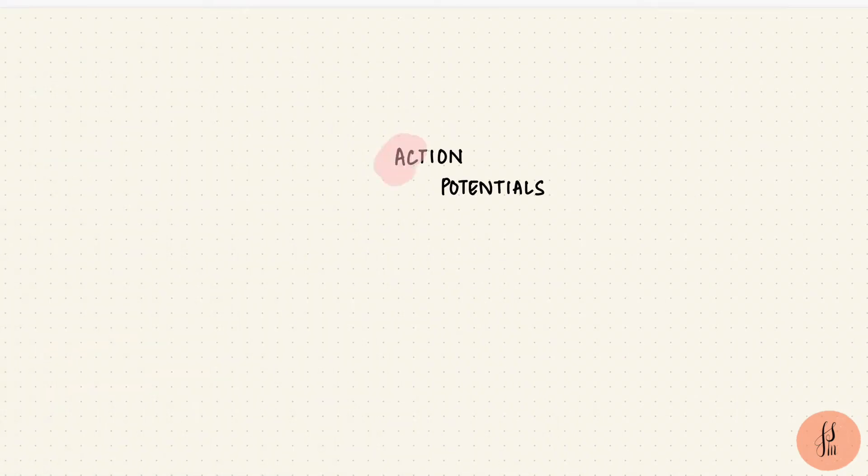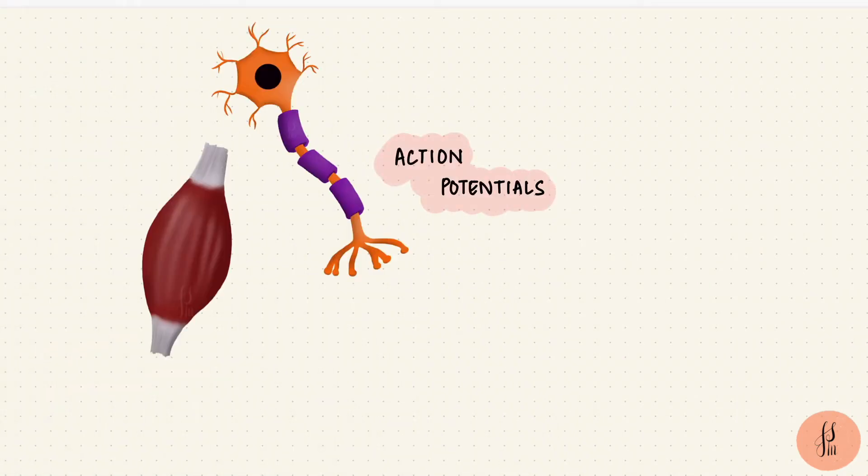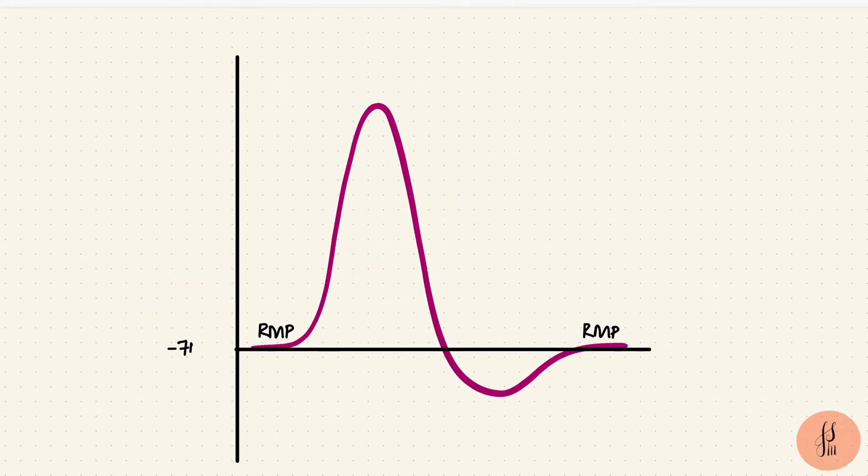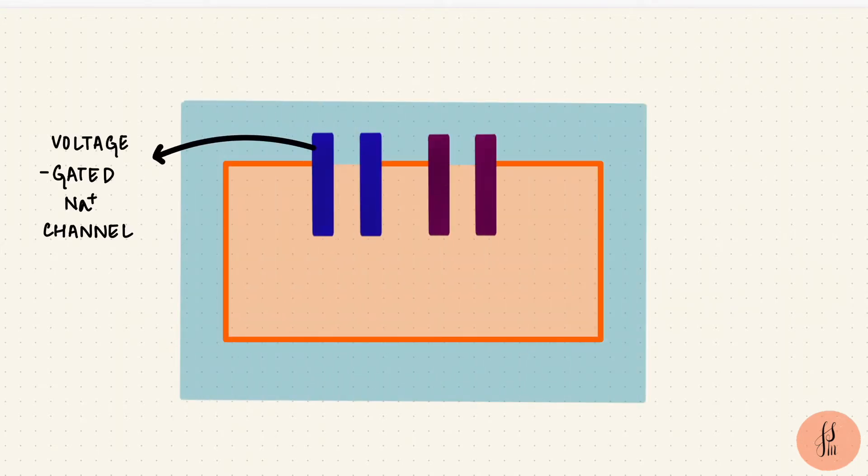Action potentials are how excitable cells like nerve and muscle cells transmit signals. They are brief changes in the membrane potential. The change happens with the voltage-gated sodium channels and the voltage-gated potassium channels.